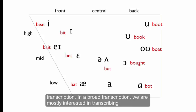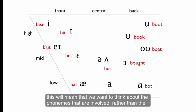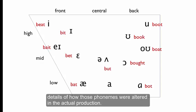In a broad transcription, we're mostly interested in transcribing the big picture version of what someone says. To a degree, this will mean that we'll want to think about the phonemes that are involved, rather than the details of how these phonemes were altered in the actual production.